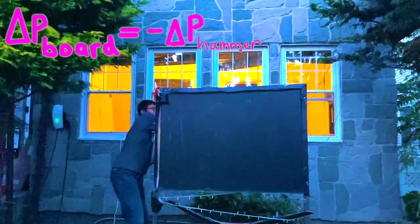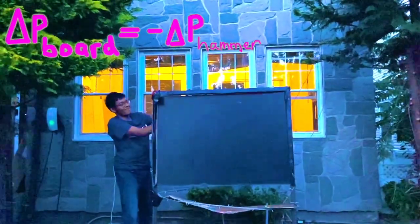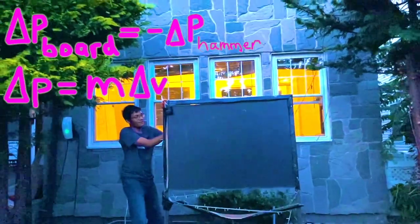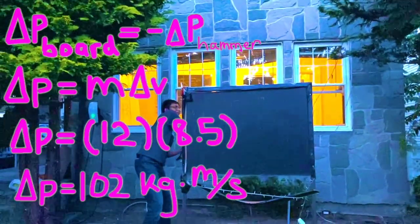Conservation of momentum says the change in momentum of the board equals the change in momentum of the hammer. So momentum is m delta v. m is mass, v is velocity. So we have 12 times 8.5 or 102 kilograms meters per second.